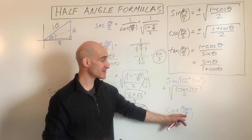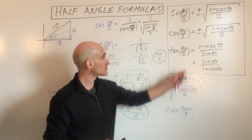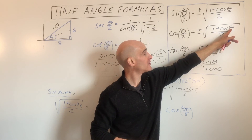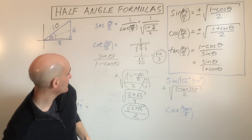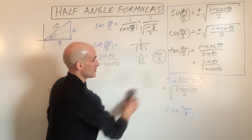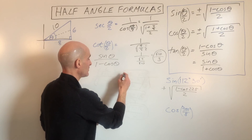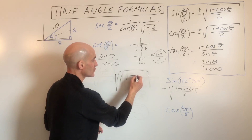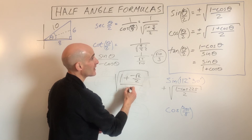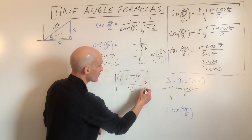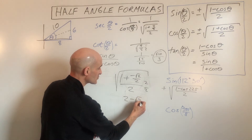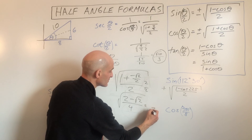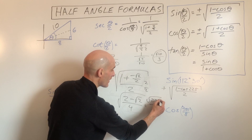Last example: cosine of 3π/8. This is half of 3π/4, so we use the cosine half-angle formula and substitute 3π/4. Cosine of 3π/4 is −√2/2. We get the square root of (1 + (−√2/2)) / 2. Multiplying numerator and denominator by 2 gives (2 − √2) / 4. Taking the square root gives √(2 − √2) over 2.